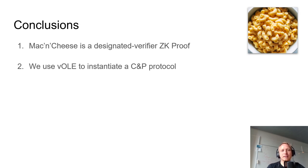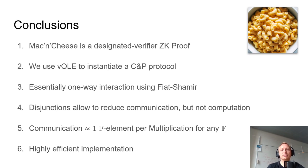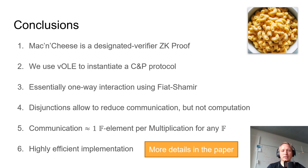In summary, Mac and Cheese is a designated verifier zero-knowledge proof system particularly suitable for large-scale zero-knowledge with large circuits. We use vector OLEs to instantiate information-theoretic MACs and get a committed proof-style protocol. Most communication flows from prover to verifier, giving two constant rounds via Fiat-Shamir. We can optimize disjunctions to reduce communication — though not computation. Communication is approximately one field element per multiplication gate for any field, and our implementation is as efficient as the state of the art. For questions, feel free to contact us during the online talk at Crypto or by email.